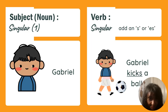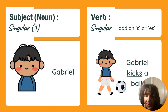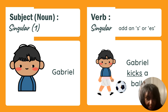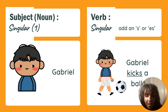Here's an example. The subject is Gabriel, also known as the noun, and it's one person — Gabriel. If I were to write a sentence about Gabriel, I would say, 'Gabriel kicks a ball.' When I'm trying to make the subject and the verb agree, if the subject or the noun talks about one item, then I will put an S or an ES on the verb.